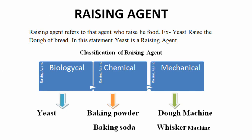Now let's study raising agents. A raising agent is an agent that raises food or any material during preparation — for example, egg, rice, wheat flour, ground flour, and many more. There are three types of raising agents: first is chemical, second is biological, and third is mechanical.